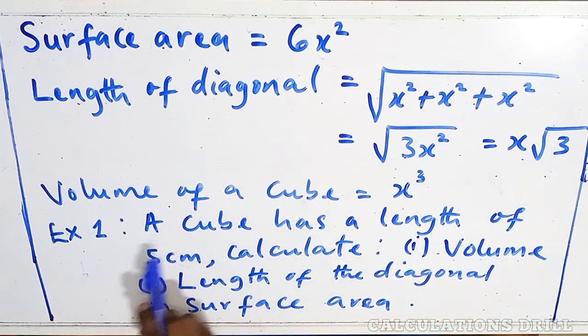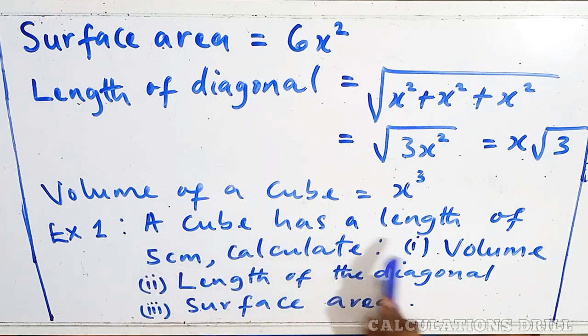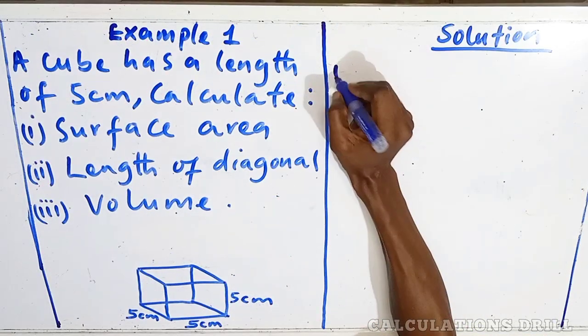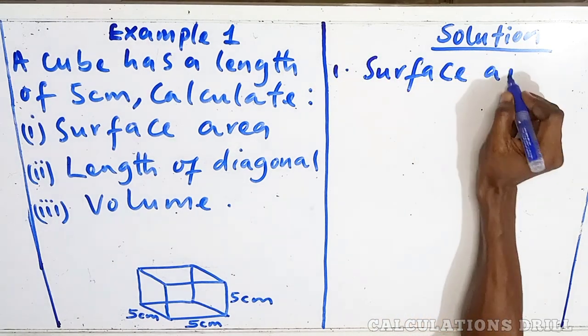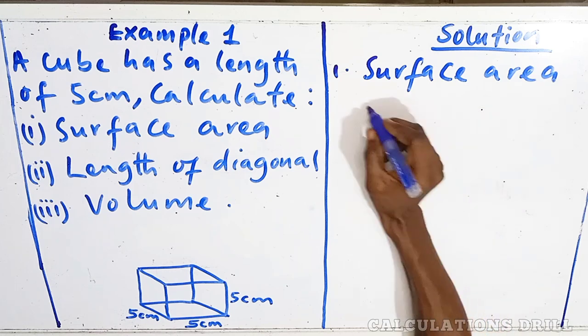Example 1. A cube has a length of 5 cm. Calculate: i. Volume, ii. Length of diagonal, and iii. Surface area. Now, we are going to see the solution here. The first one we are calculating is surface area.